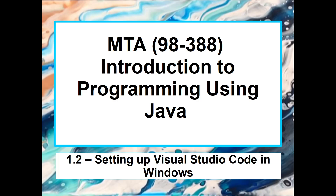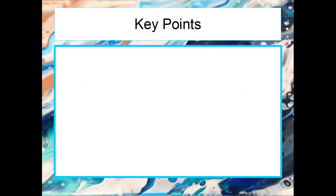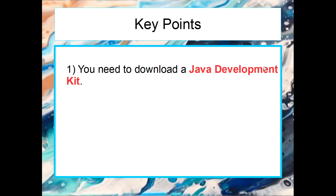Hello and welcome to the second video of Introduction to Programming using Java. In this video we're going to be talking about setting up Visual Studio Code in Windows. For this video we need to remember four key points. Number one, we always need to have a Java Development Kit that we need to download.